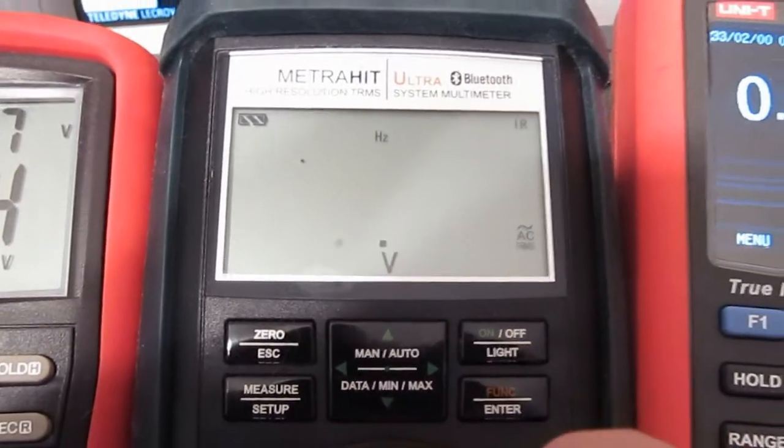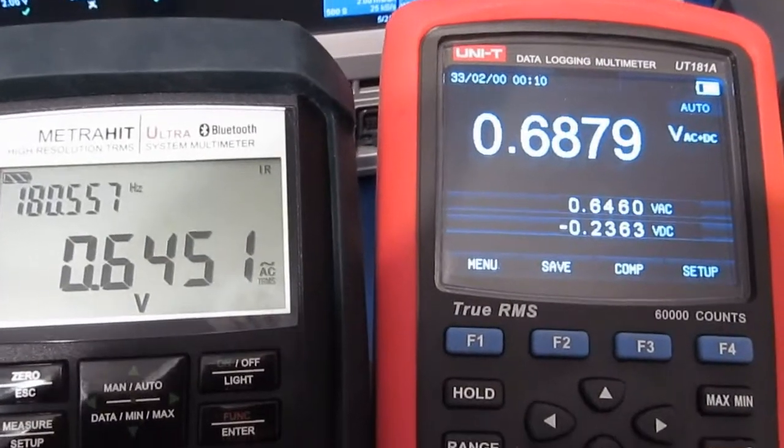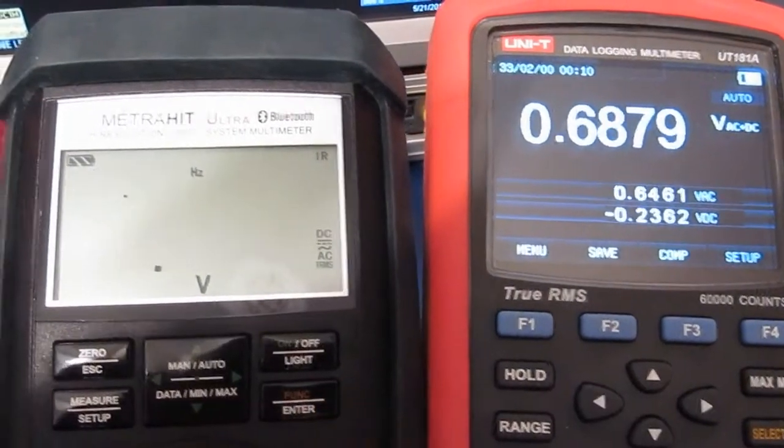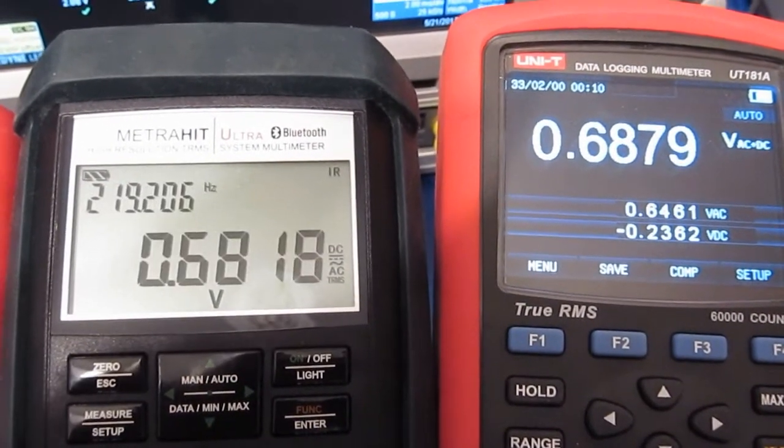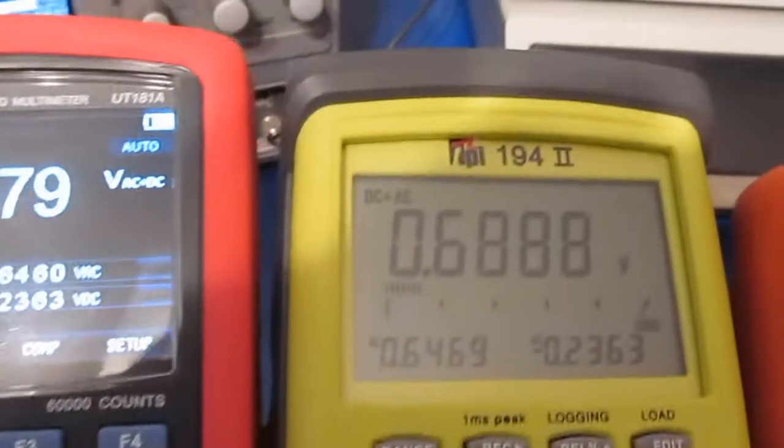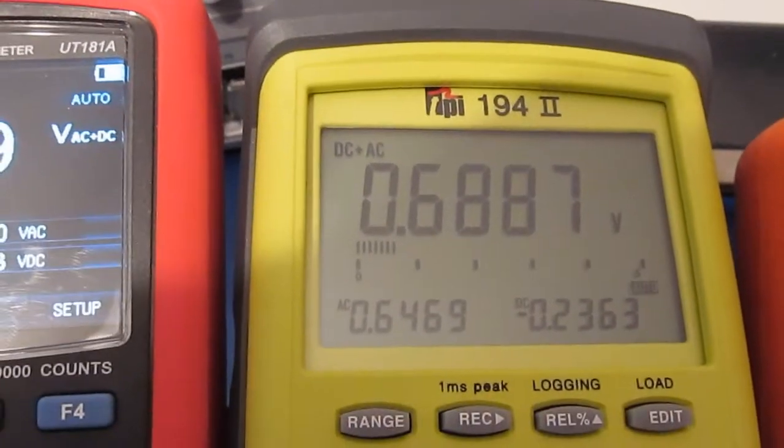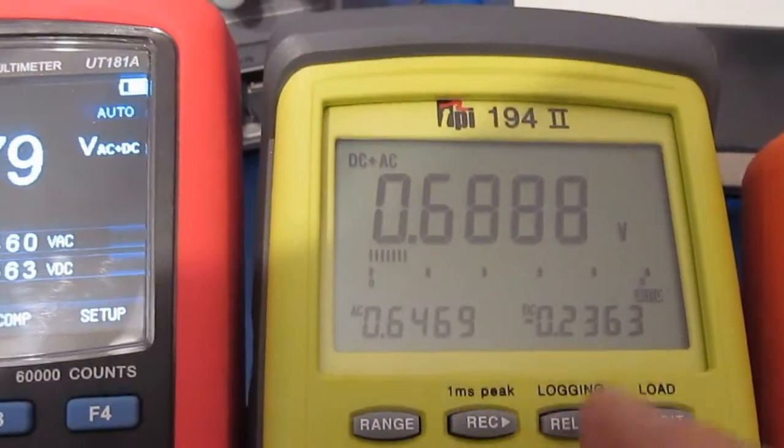The TPI 194, this will be your AC plus DC, AC, and the DC value.